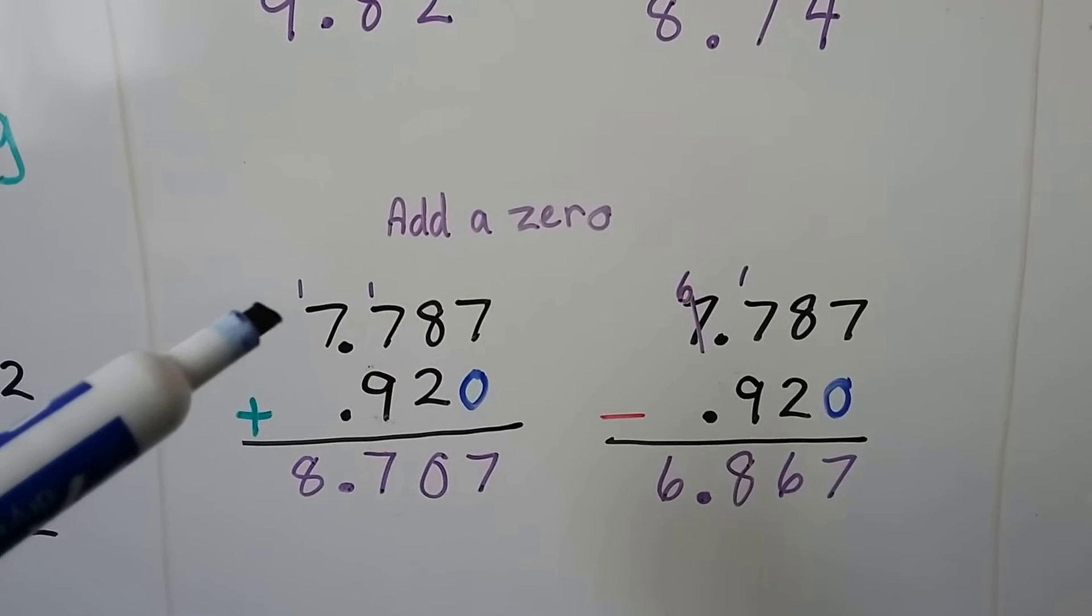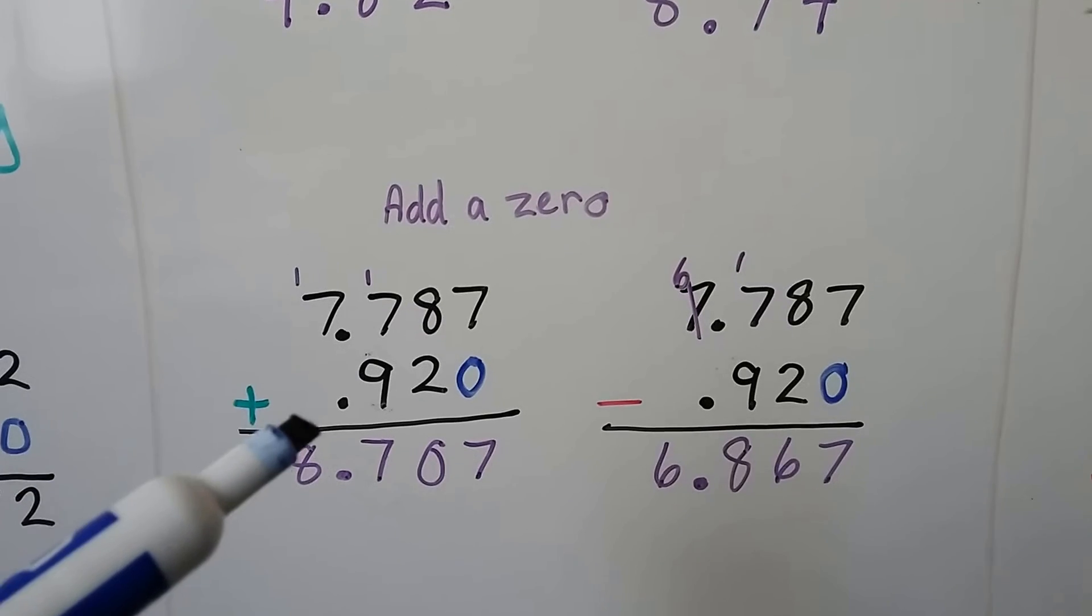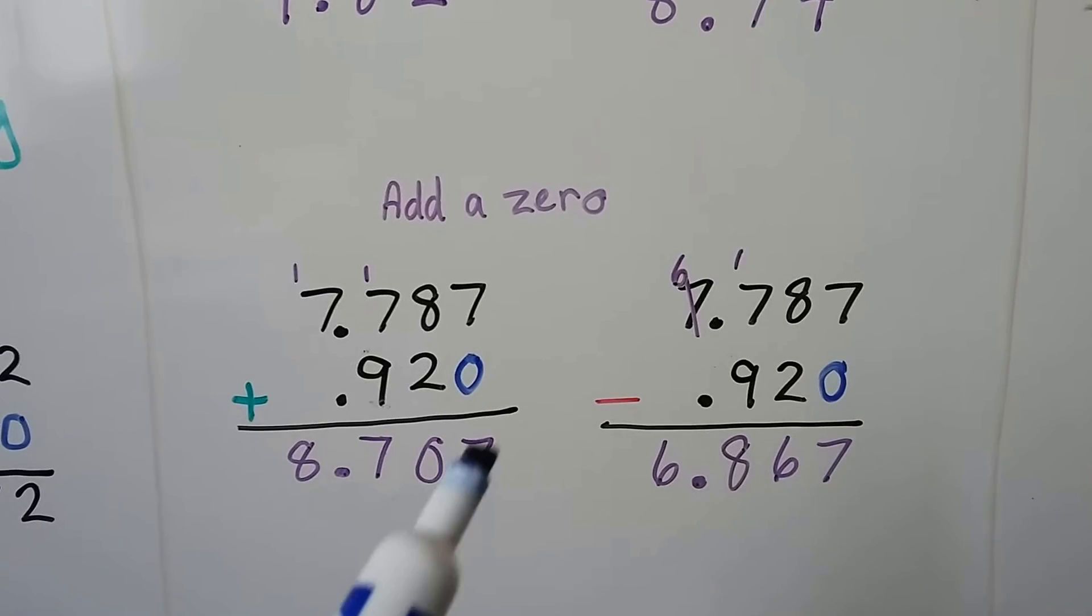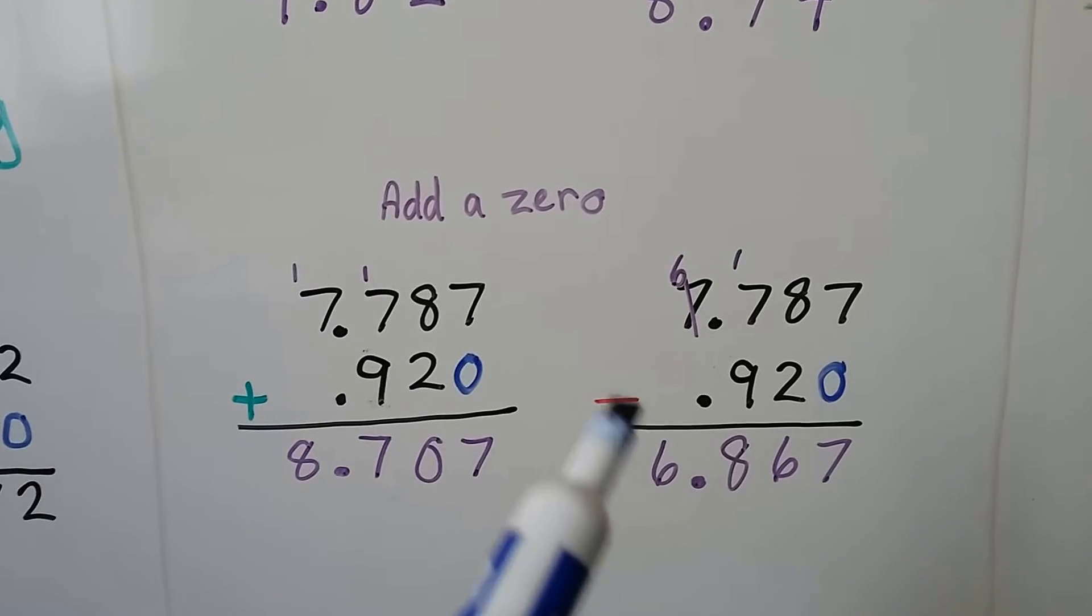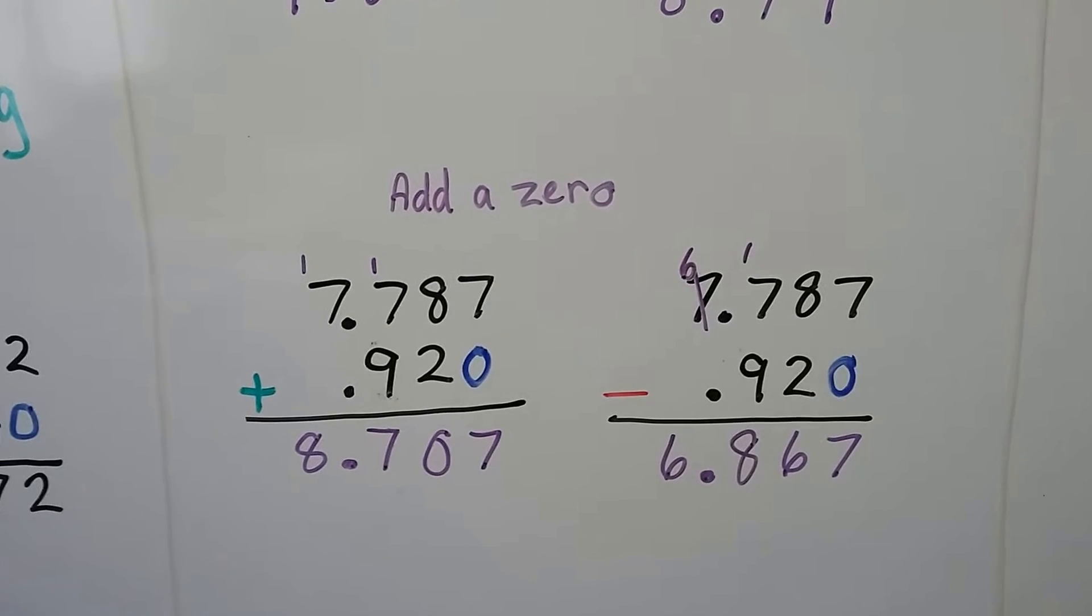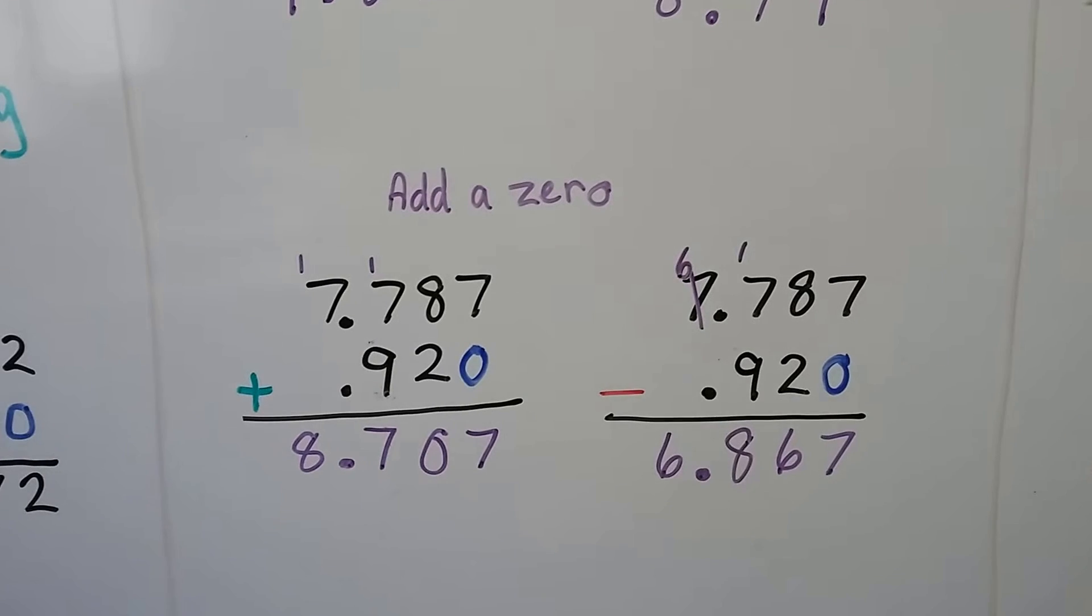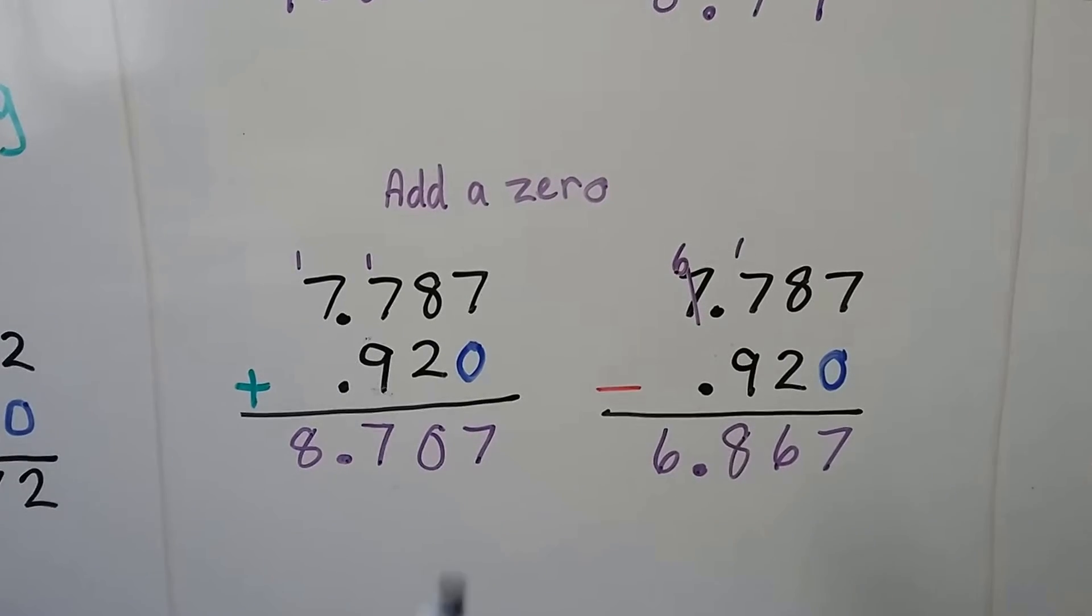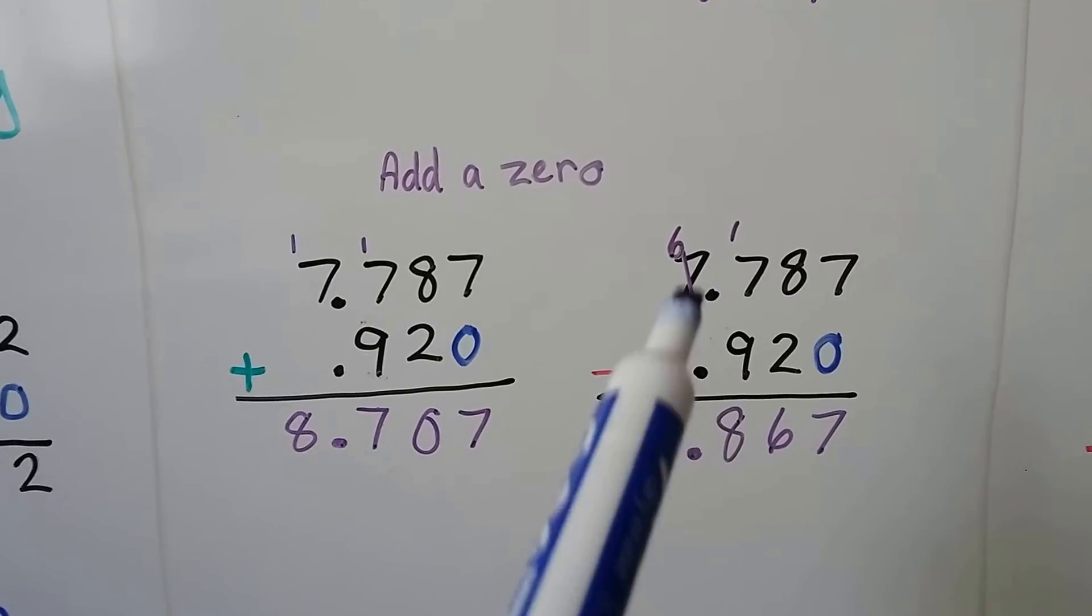Here we have 7.787 plus 0.92. We add a zero here to fill in that place value. And we can also do subtraction with the same numbers and fill in a zero for that place value. It's just as if that decimal point wasn't there. Just make sure that it's in the answer coming straight down with the other ones.